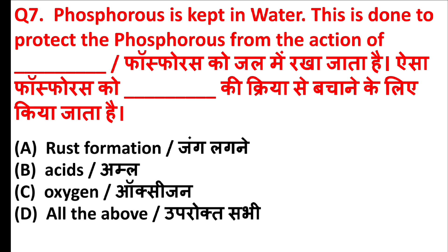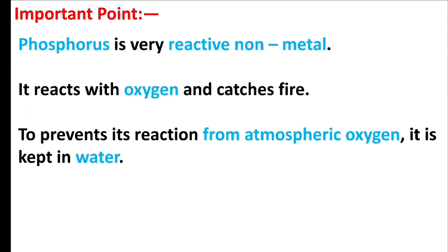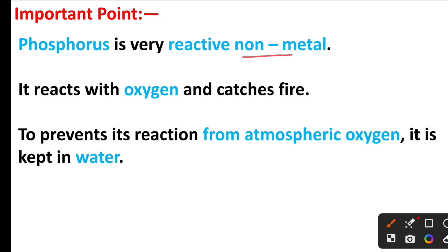Phosphorus is kept in water. This is done to protect the phosphorus from the action of what? The right answer is option C: Oxygen. Friends, phosphorus is a very reactive non-metal. It reacts with oxygen and catches fire. To prevent its reaction with atmospheric oxygen, it is kept in water.